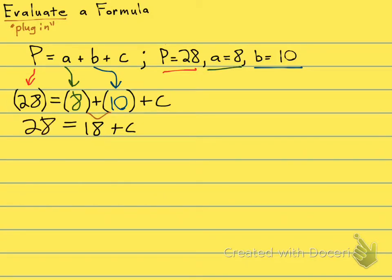Now solve for C. Get this grumpy old C all by herself. We need to get rid of an 18, which is being added. So we need to subtract 18 from both sides. Minus 18 from the right side of the equal sign. Minus 18 from the left side of the equal sign.